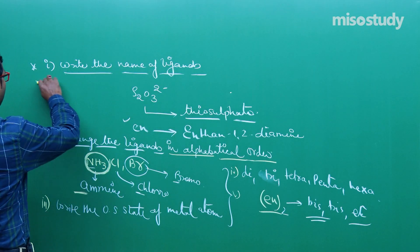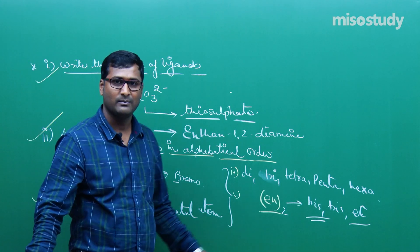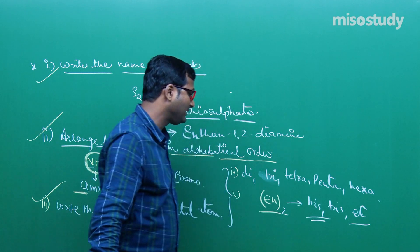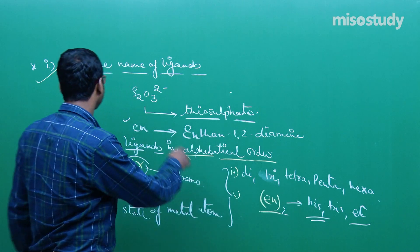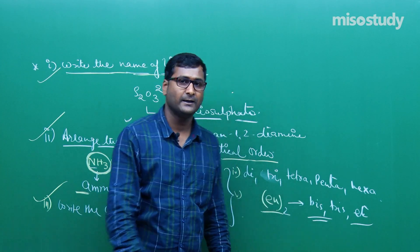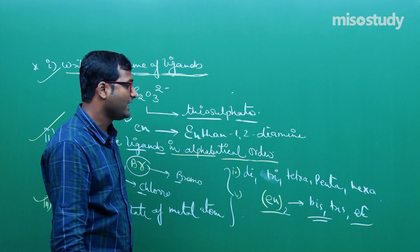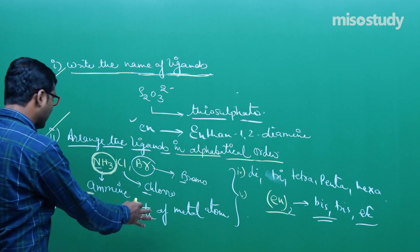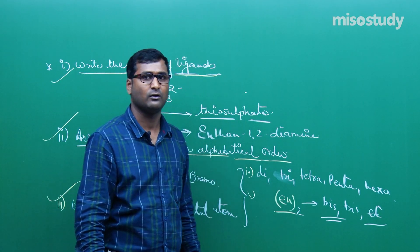To recap: write the name of the ligand, arrange the ligand, write the oxidation state of the metal atom using di, tri, tetra, penta, hexa. And for complex ligands: bis for 2, tris for 3, tetrakis for 4, pentakis for 5, hexakis and so on. These are the rules which help you to write down the IUPAC name.